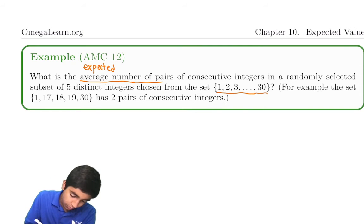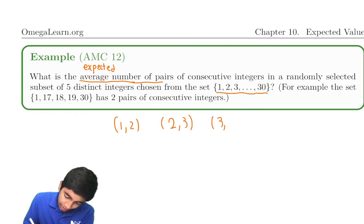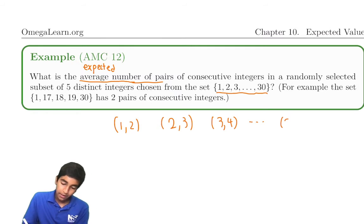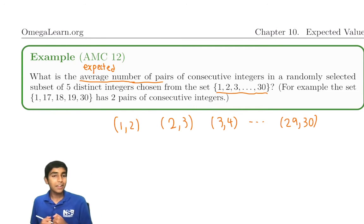We can use it on each pair. Well, the pairs are (1,2), (2,3), (3,4), so on until (29,30). There are 29 pairs. So now let's just find the probability that each one of these will be chosen.